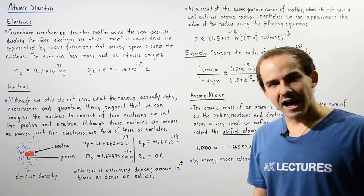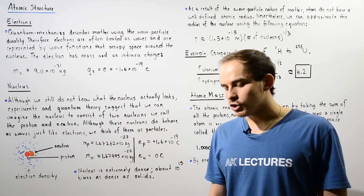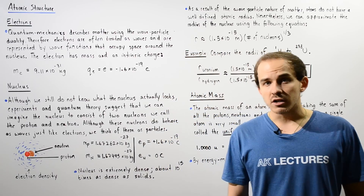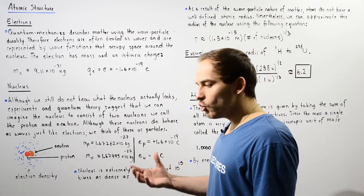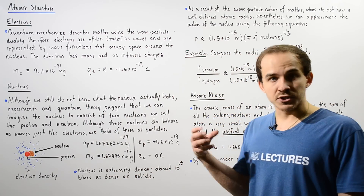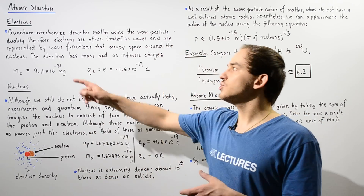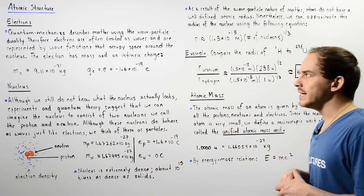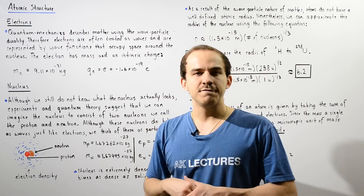Let's begin by defining what an electron is. In quantum mechanics, we have the wave-particle duality of matter — matter cannot only act as particles, but it can also act as waves. In quantum mechanics, we can use the Schrödinger equation to solve for a mathematical equation that represents our electron as a wave. This equation is known as the wave-function. So in quantum mechanics, electrons are often depicted as waves, and we represent electrons using equations known as wave-functions.